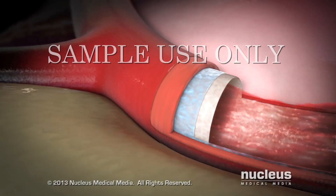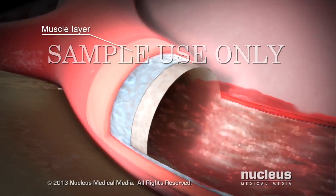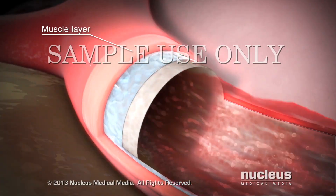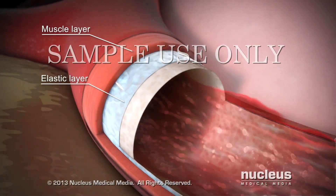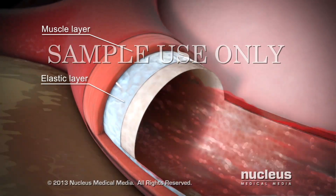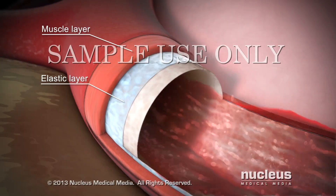The walls of the arteries contain special muscle and elastic layers that help them adapt to the blood pulsing through them.